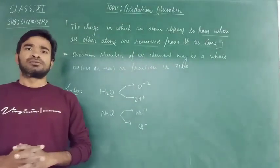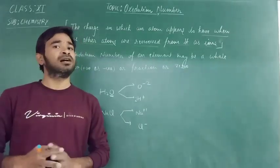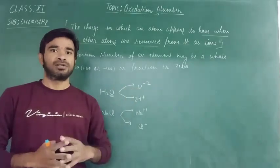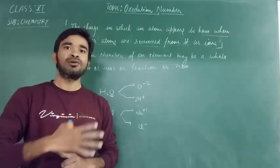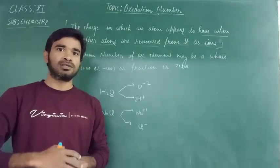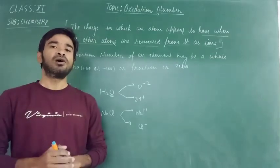It means it is the number of electrons gained or lost by the element when it forms any compounds. During the formation of compounds, if an element loses electrons or gains electrons, the number of lost or gained electrons is called the Oxidation number.